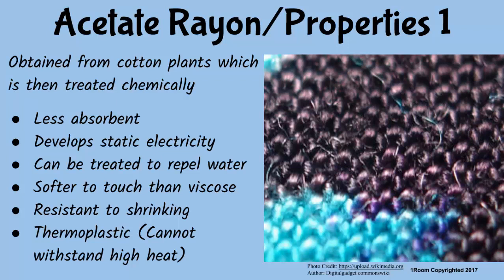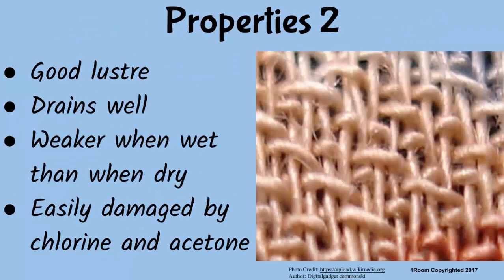Acetate rayon develops and holds static electricity, can be treated to repel water, and is softer to handle than viscose rayon. It is also resistant to shrinking, creasing, and stretching, and it is thermoplastic, meaning it does not withstand high heat and can thus be permanently pleated using heat. Similarities with viscose include good luster, draping well, being weaker when wet than dry, and being easily damaged by chlorine bleaches and acetone solvents.